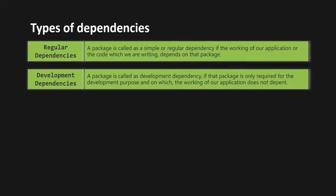For example, a code formatter or an auto saver. These tools help us in increasing our productivity while we are developing an application. The working of our application does not depend on these tools — we only need them for development. So these types of packages are called development dependencies.